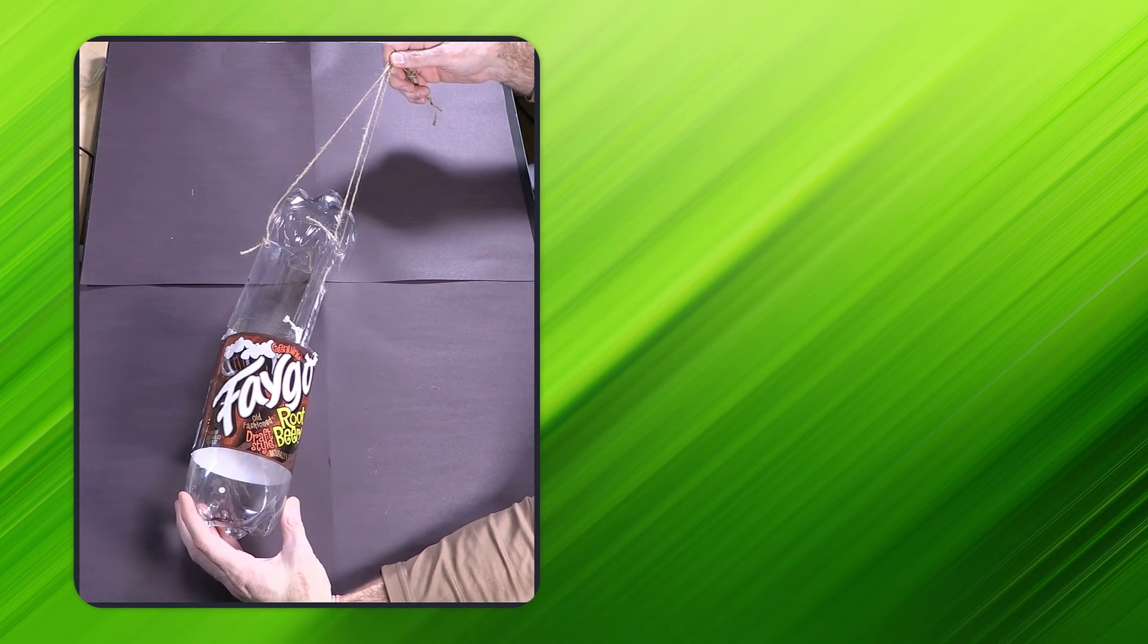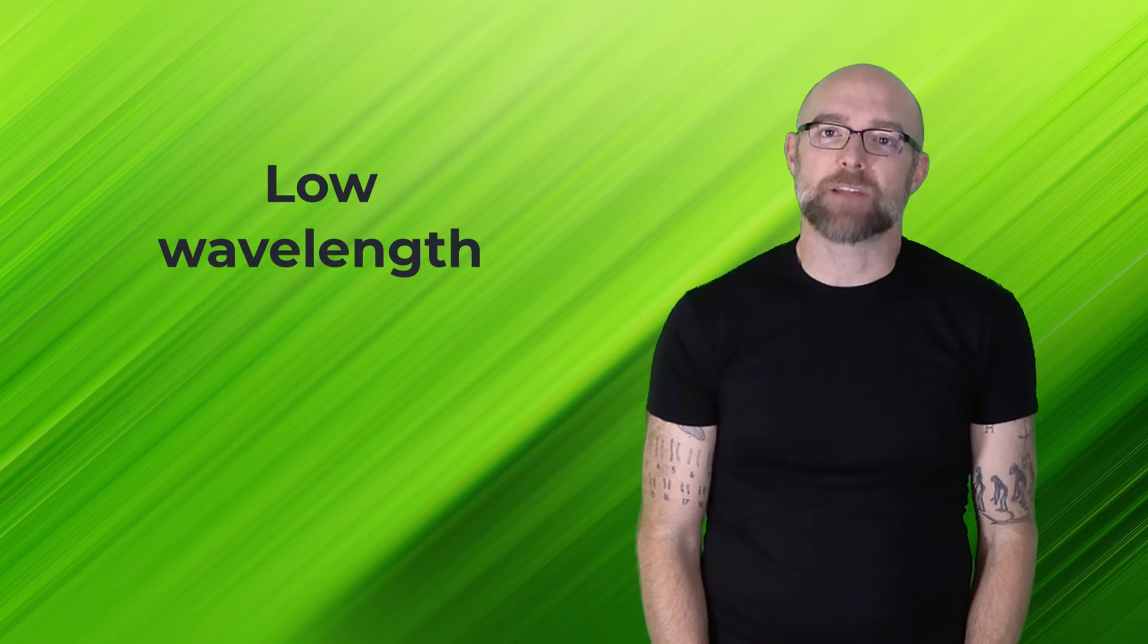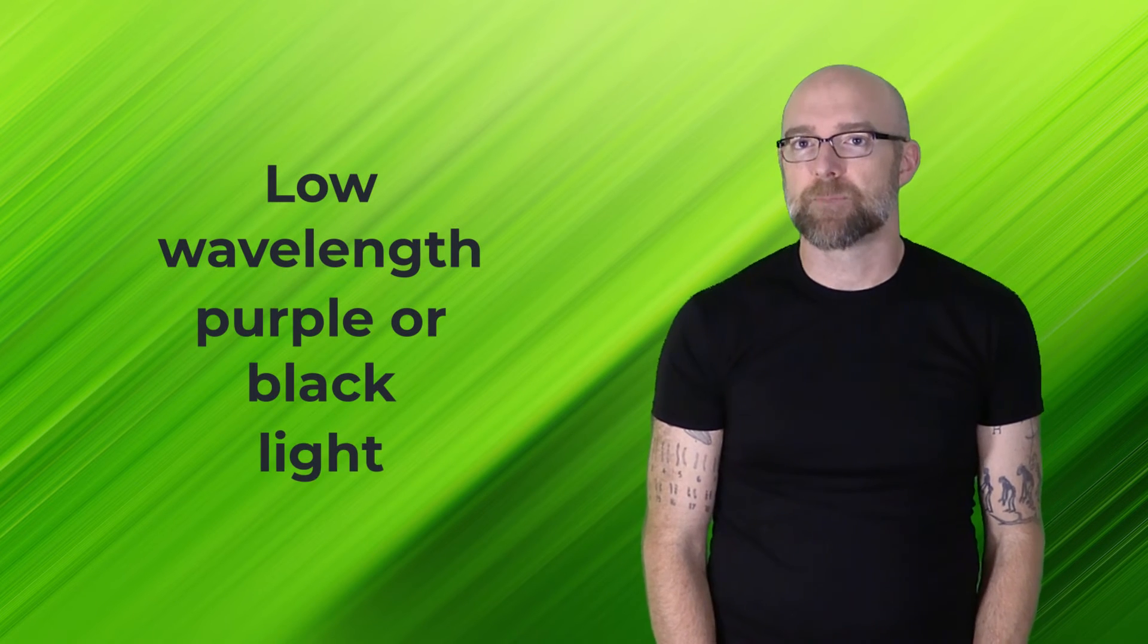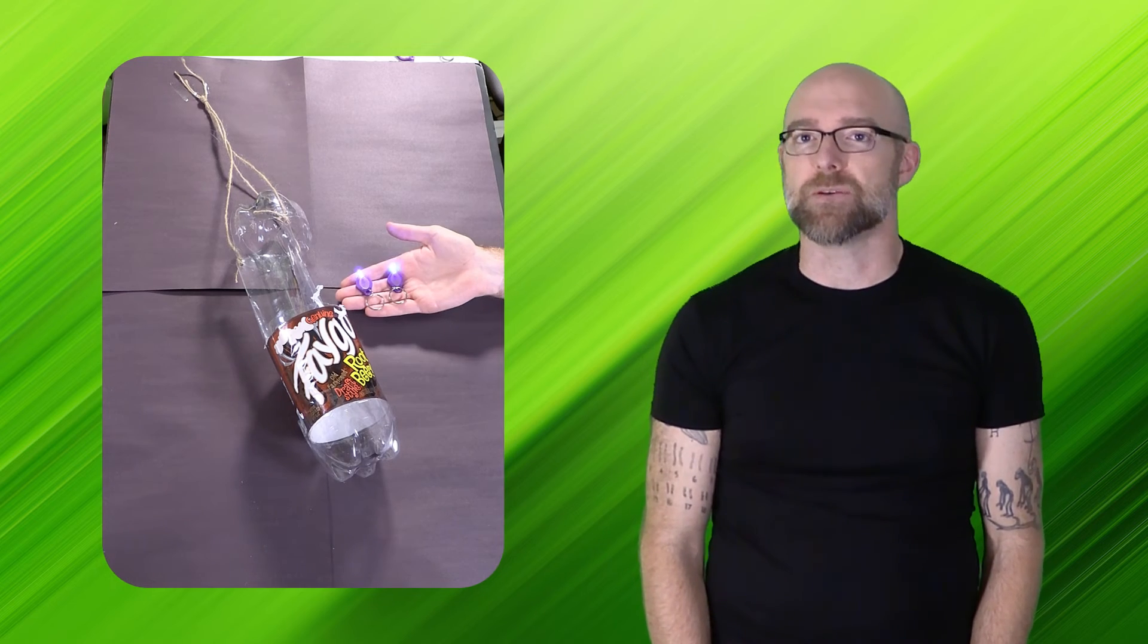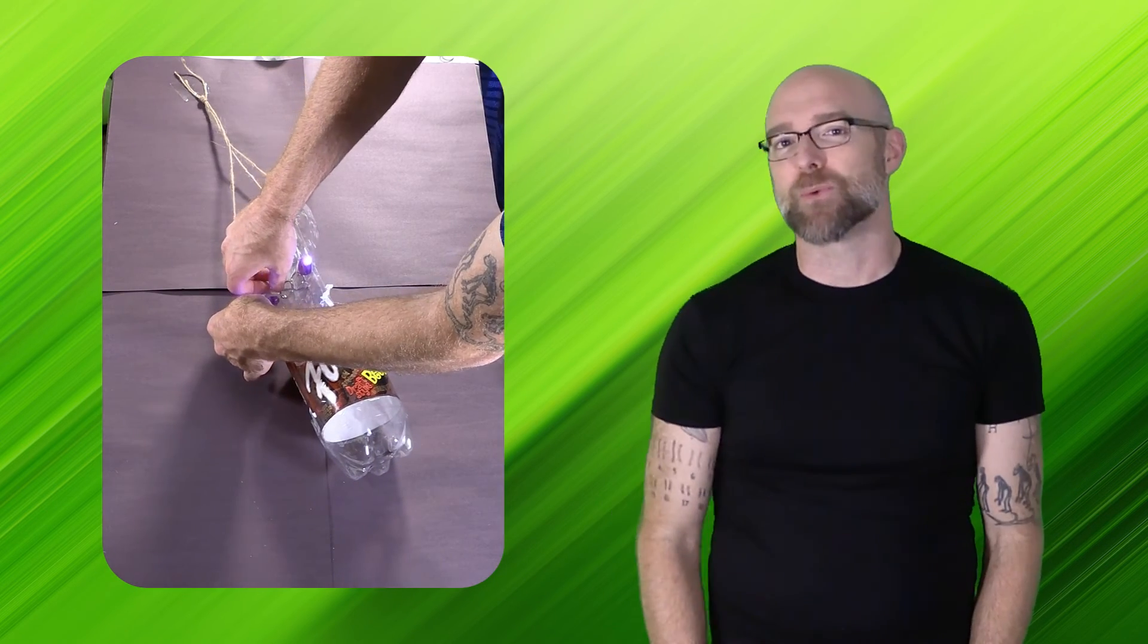And that's how you make the fundamental structure of a moth trap. The last thing you'll need is a low wavelength purple or black light. We like to use keychain black lights. They're pretty easy to find and buy online and they come with a switch for easy use. Tape one or more of these lights onto your panels and you're ready to go.